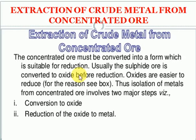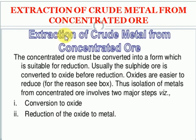Today we are going to discuss metallurgy, specifically the Ellingham diagram. Let's recollect the topics we discussed previously. First, we recall the extraction of a crude metal from its concentrated ore. Whatever metal ore is there, we want to convert it into an oxide first, and then that oxide is further reduced by a reducing agent to form the metal.